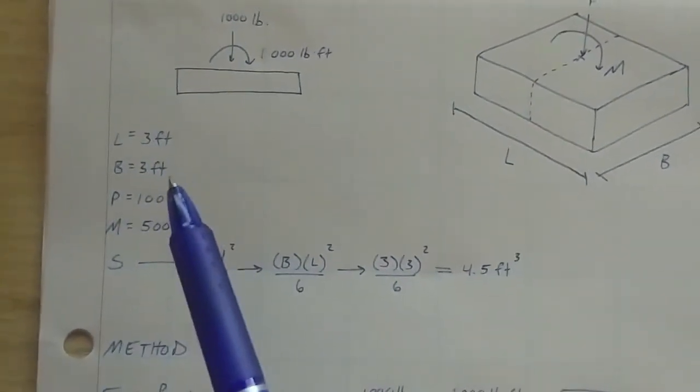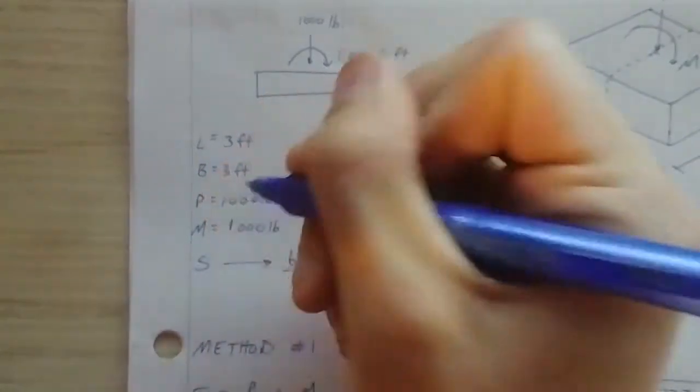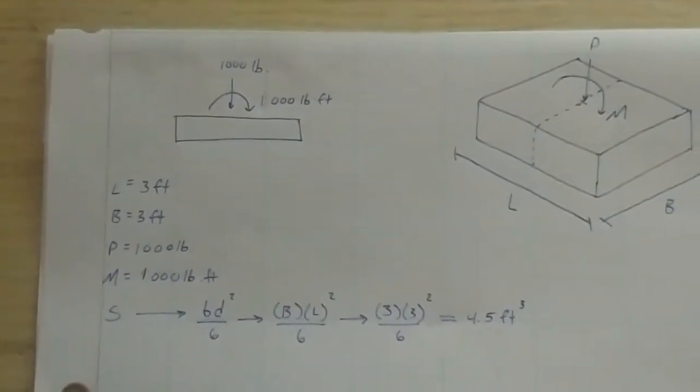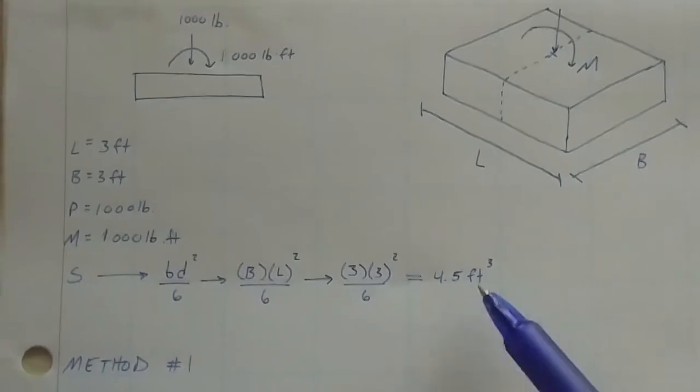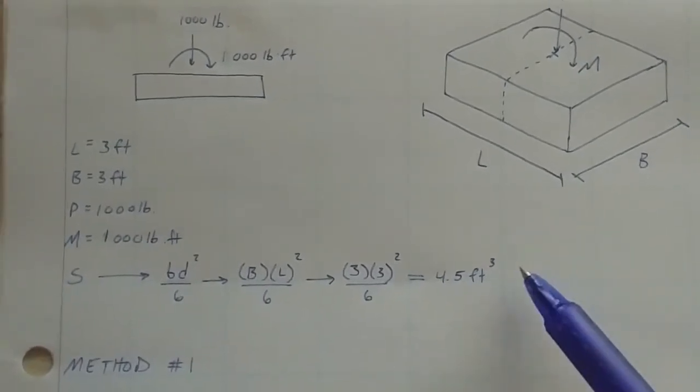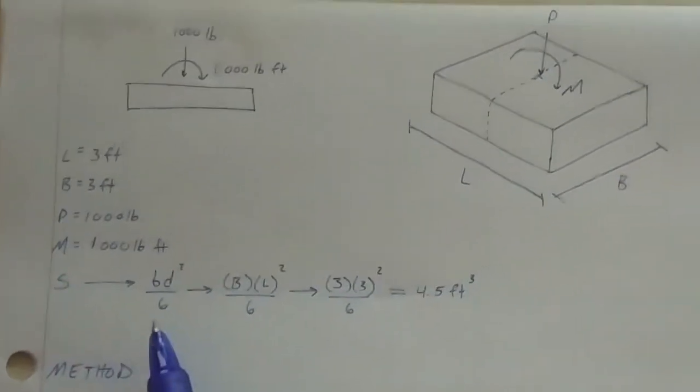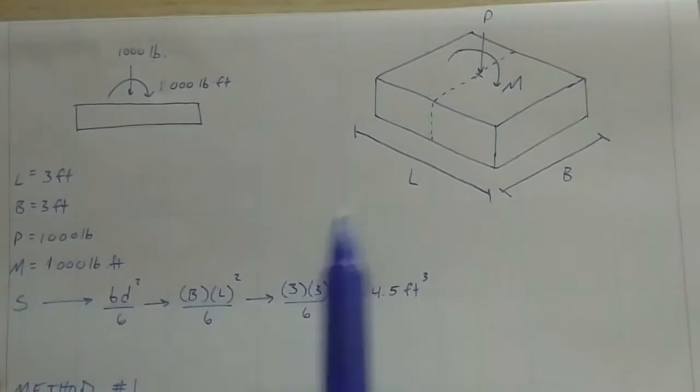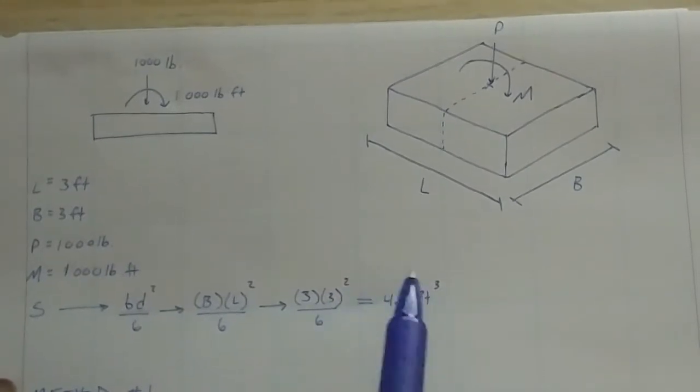We have a 3x3 footing, 1,000 pounds, 1,000 pound-foot. And then from last time, we have our S of 4.5 feet cubed. That's broken down into BD squared over 6, which is capital B times L squared over 6, gets you 4.5.